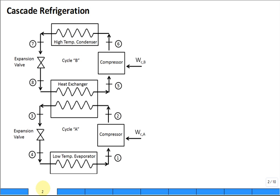What you'll have is a cycle A, it'll be a low temperature cycle, and cycle B a high temperature cycle, and they're linked by a heat exchanger where for cycle A that heat exchanger behaves as a condenser, and for cycle B that heat exchanger behaves as an evaporator.